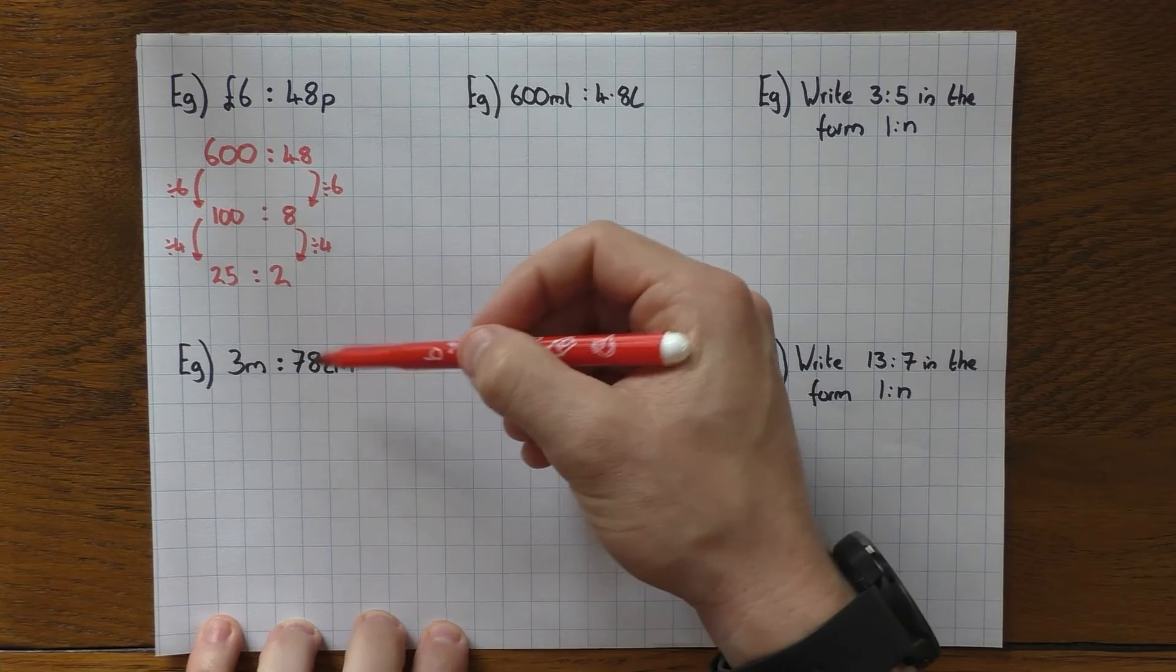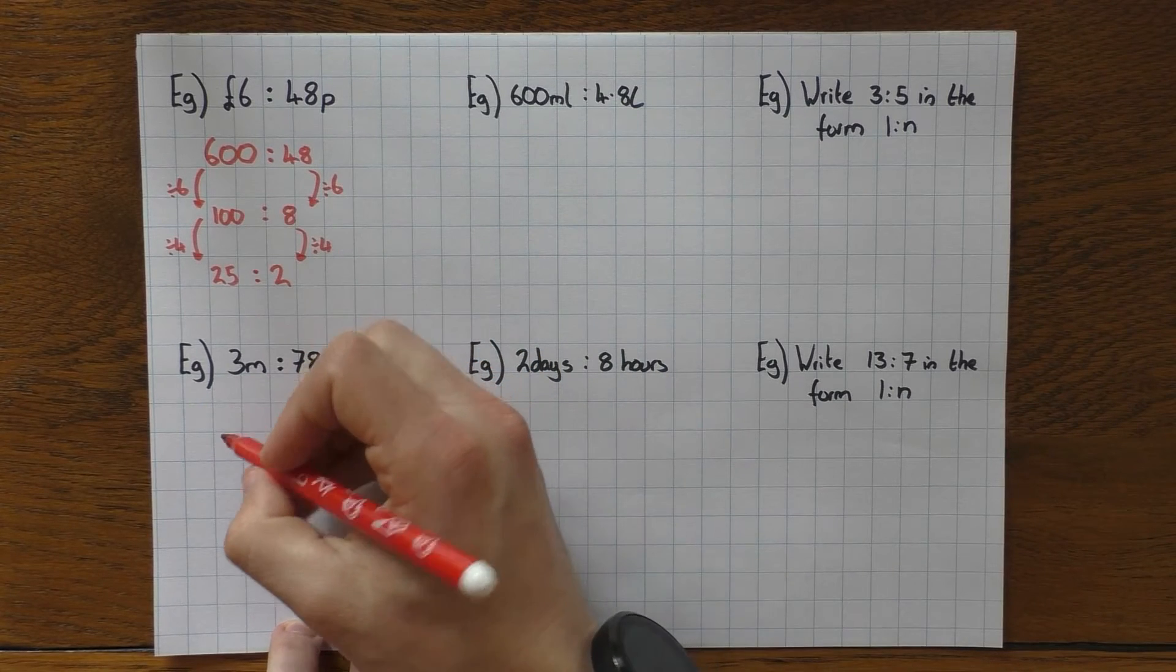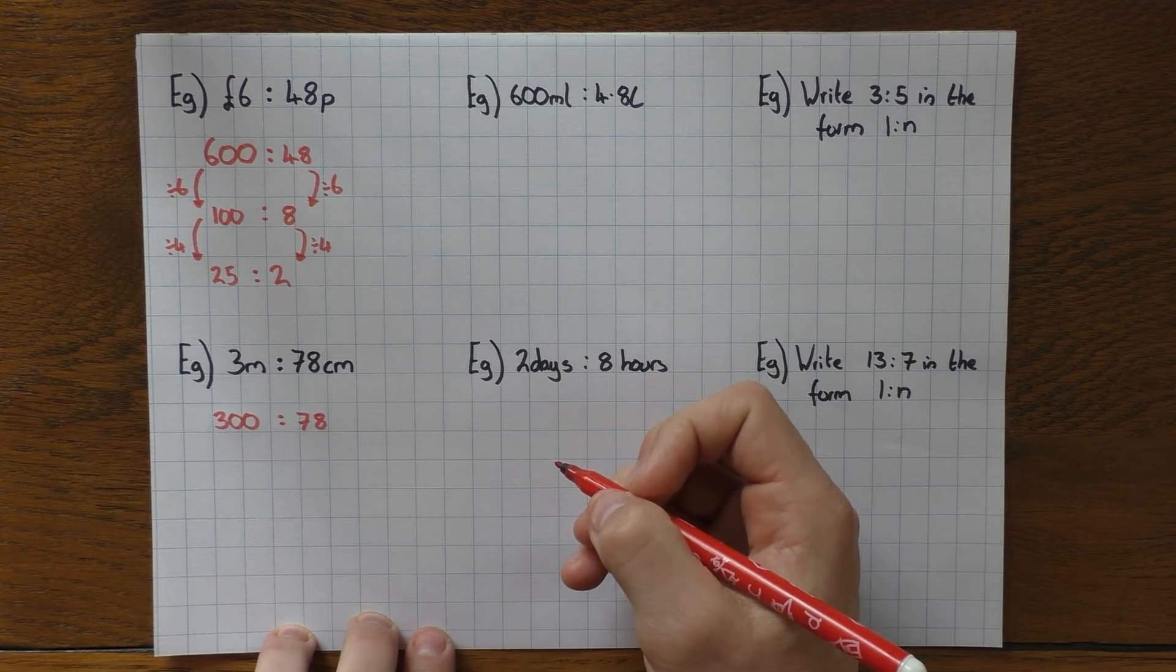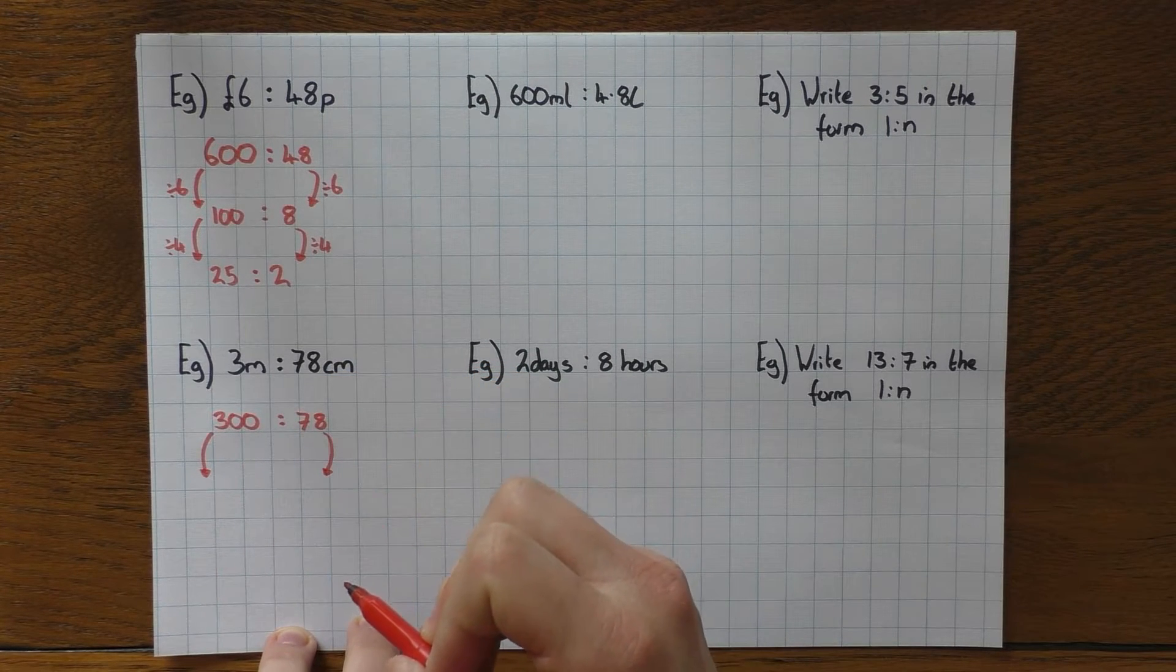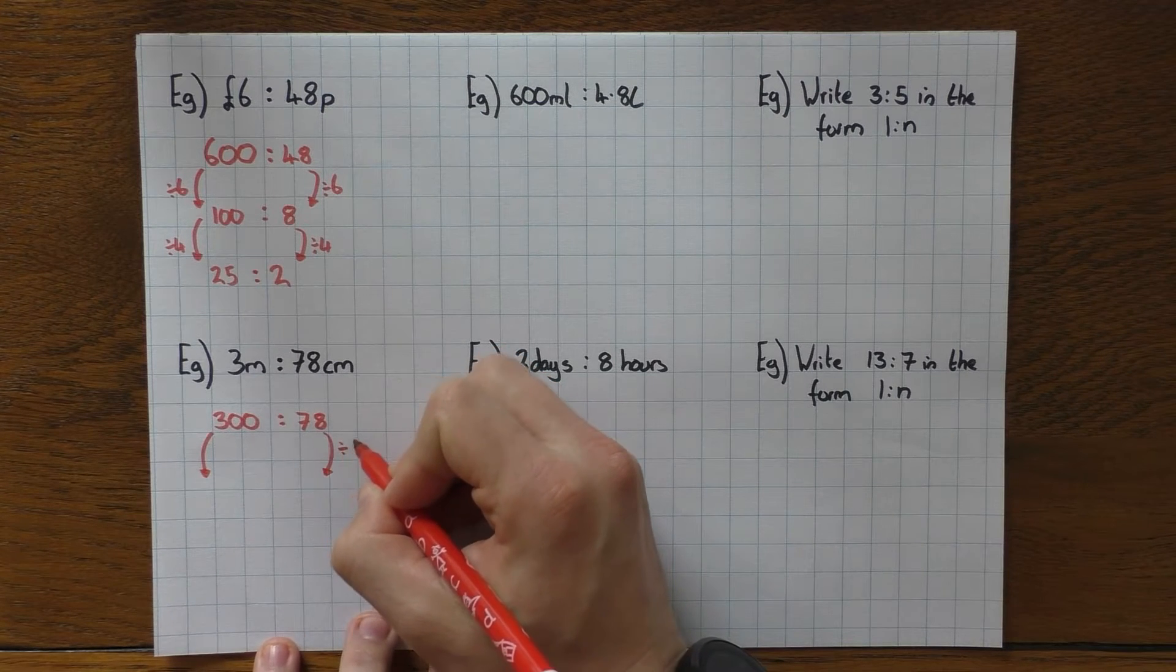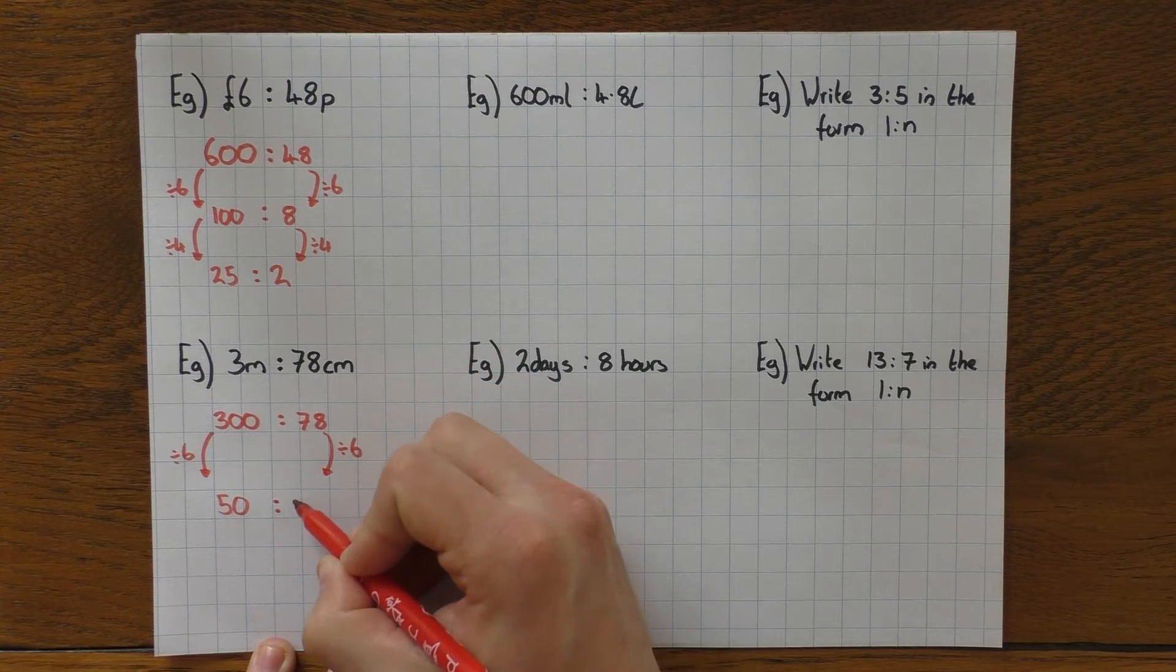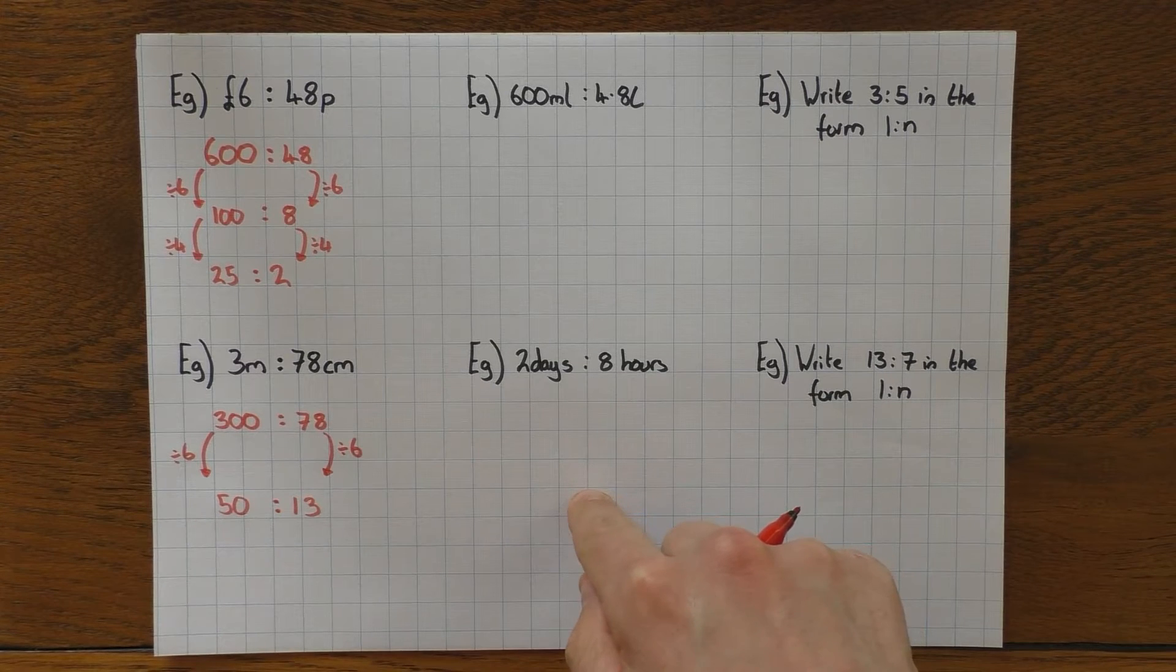Same here. I've got 3 meters and 78 centimeters. I'm not going to convert that to meters because I'll be left with a decimal. I'm going to convert that into centimeters. So 3 meters is 300 centimeters. And then obviously I'll keep my 78 centimeters. Again, we simplify. So what number goes into 300 and 78? A bit trickier to spot the highest common factor here. But try halving them as a starting point if you wish. But the highest common factor is in fact 6. So 300 divided by 6 is 50. 78 divided by 6 is 13. Again, I can't simplify that any further. So I just leave it there.